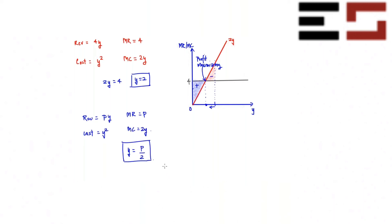Setting p equal to 2y gives the supply function y equals p over two. At p equal to zero, the marginal revenue curve coincides with the horizontal axis and the firm produces nothing, so supply is zero — which is consistent with the formula.